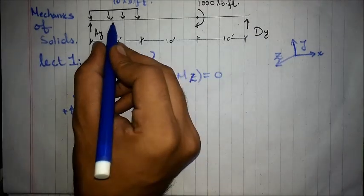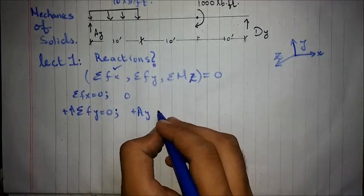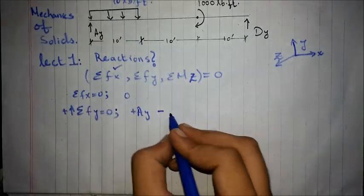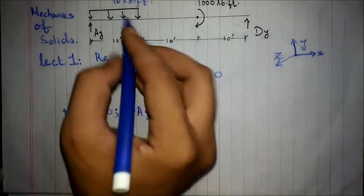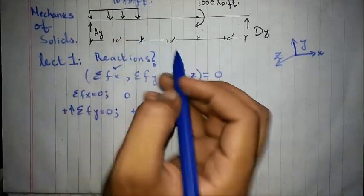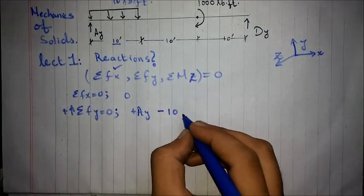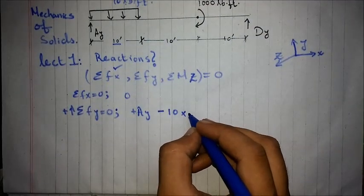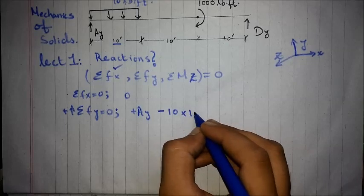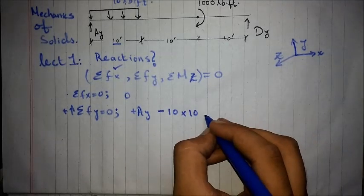And the action force is minus, since it is acting downwards, minus 10 pounds per foot. And there are 10 feet, so each foot counts for 10 pounds, and 10 feet counts for 10 multiplied by 10 pounds.